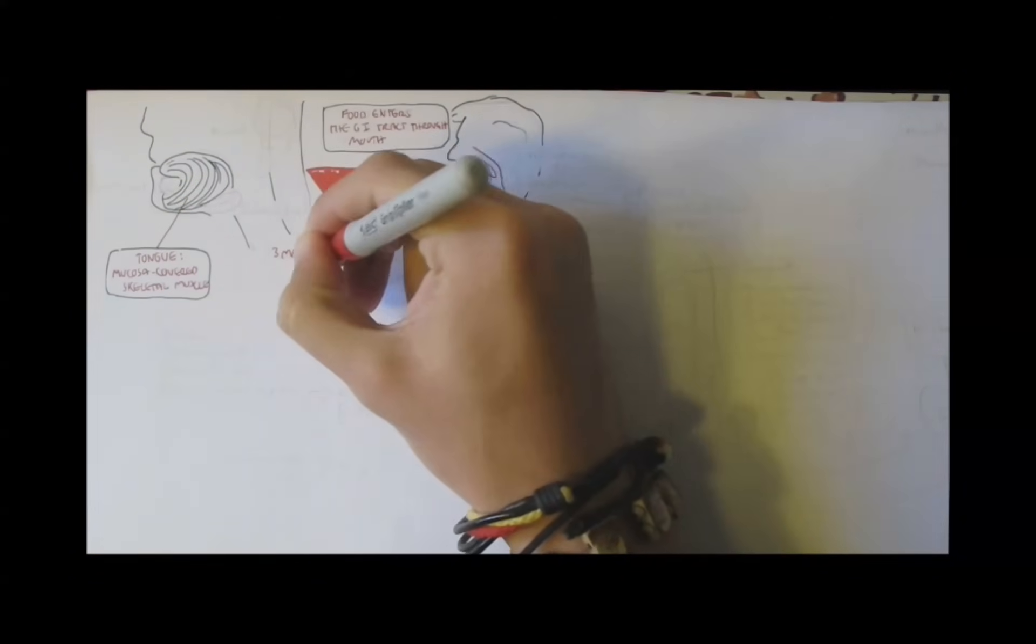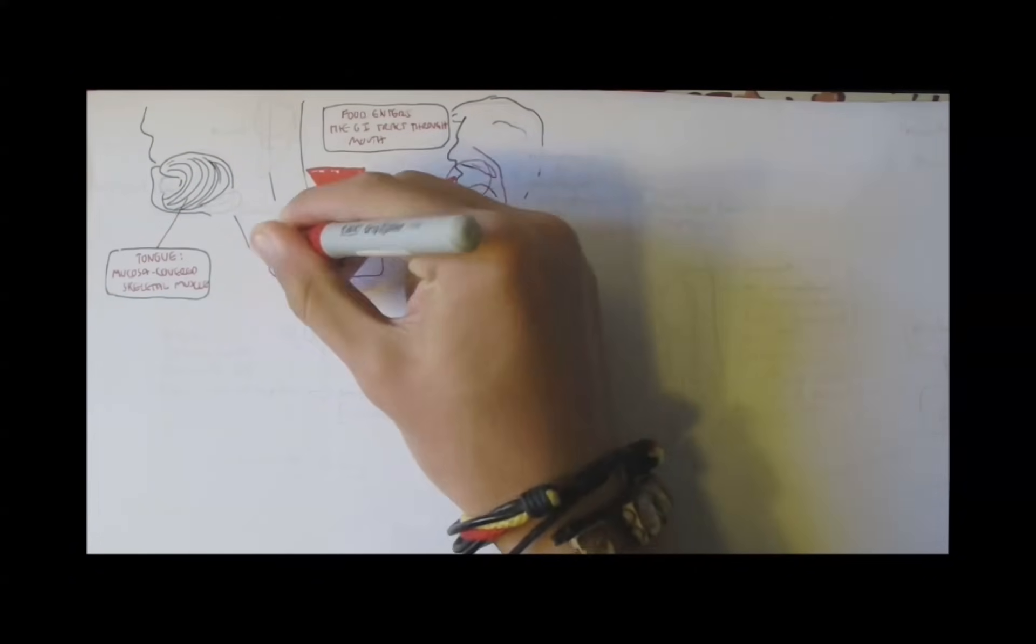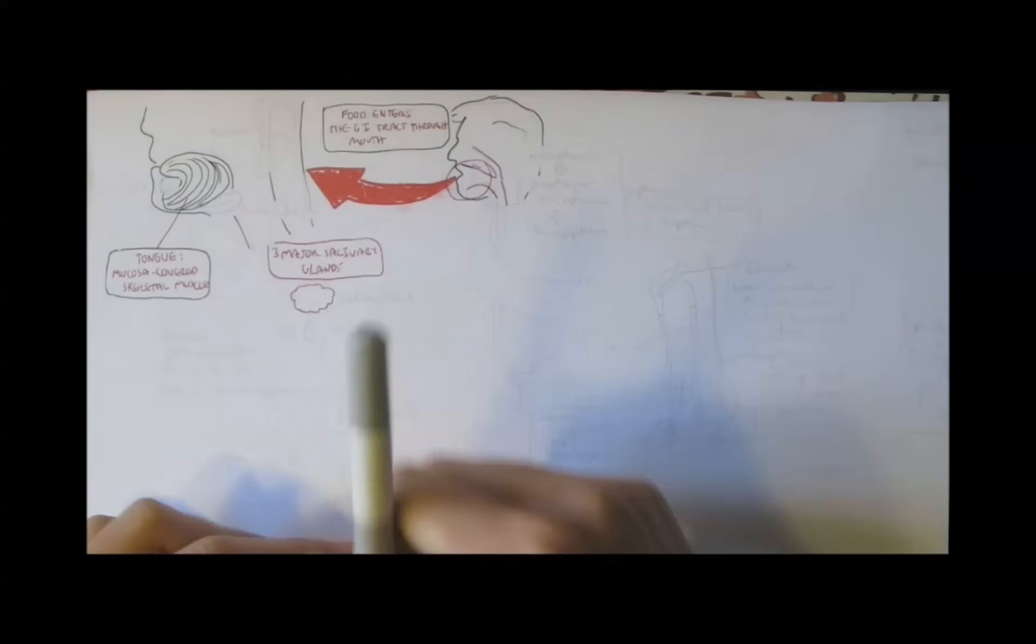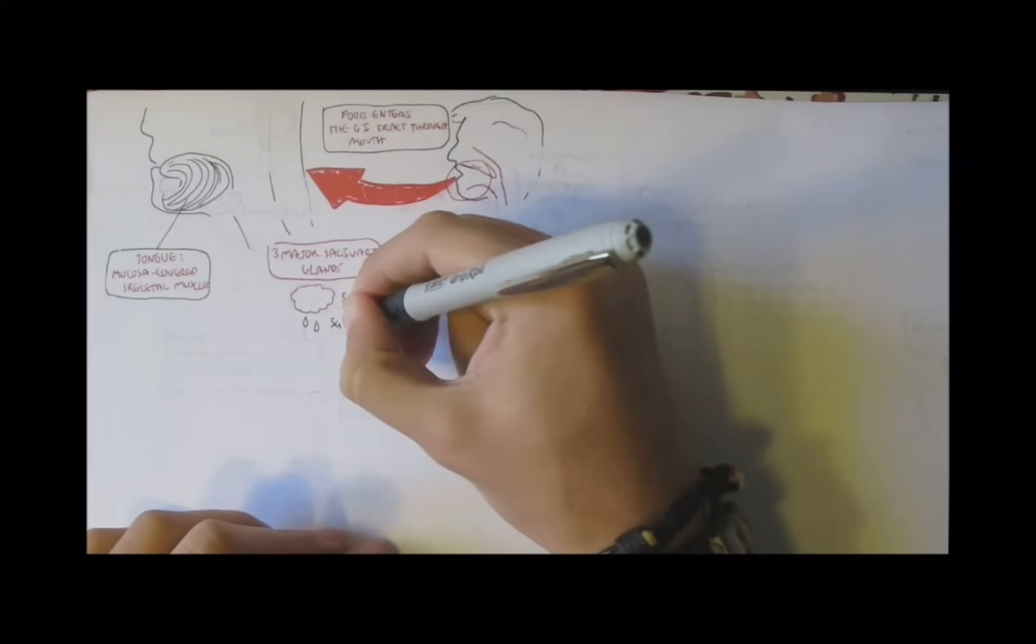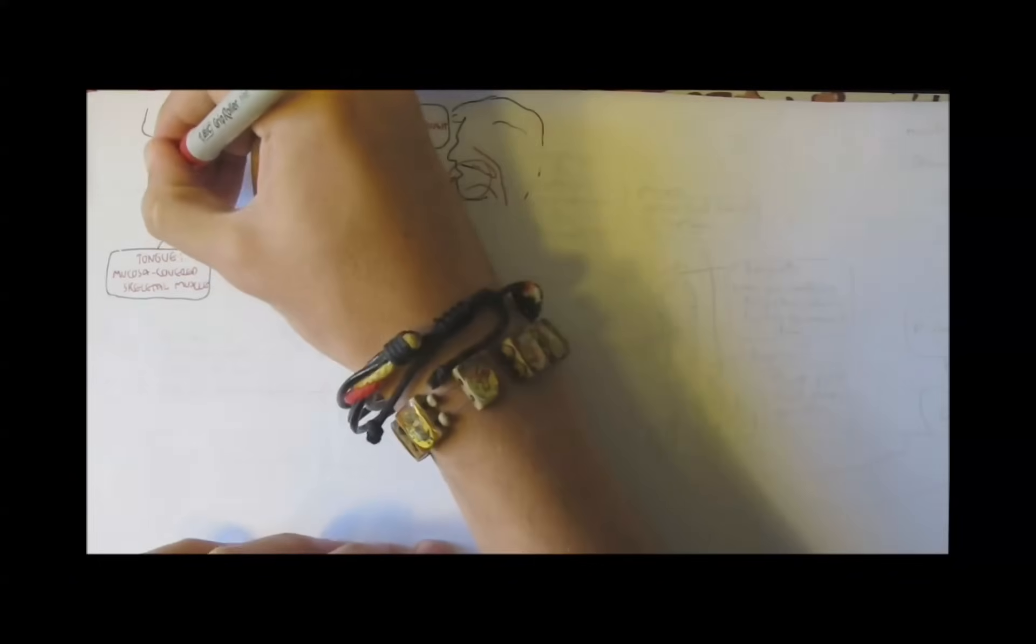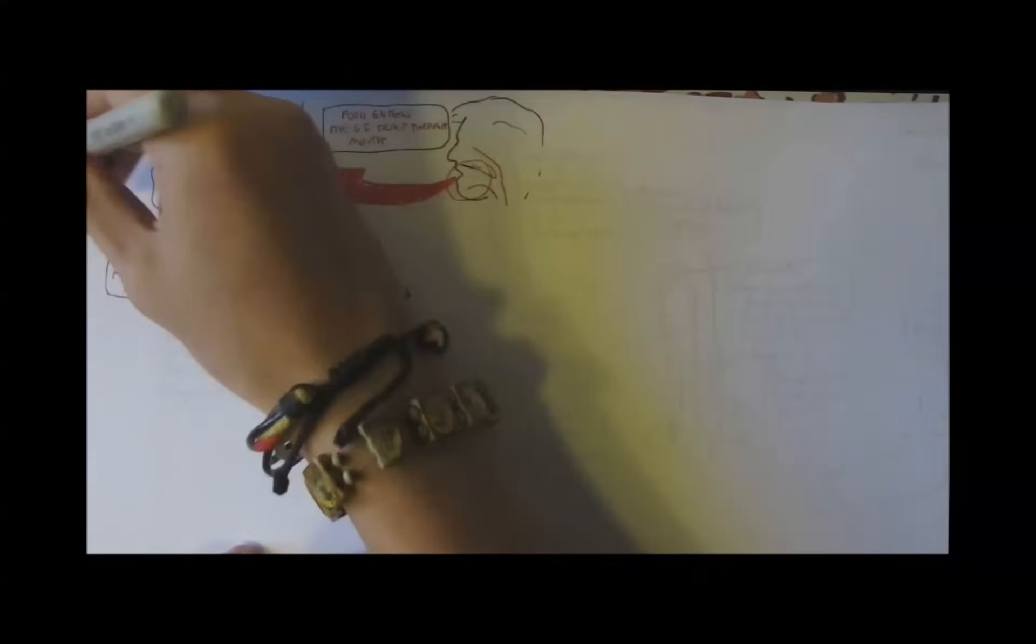Saliva is produced by three major glands in the mouth. And these salivary glands are the sublingual, sub means under, and lingual means tongue in Latin, so under the tongue. Sublingual.